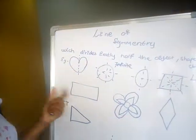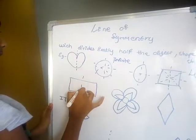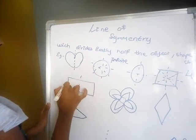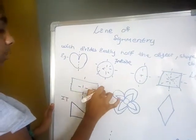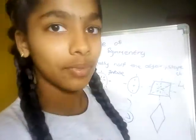Now rectangle. Rectangle has only two lines of symmetry — one vertically and one horizontally.